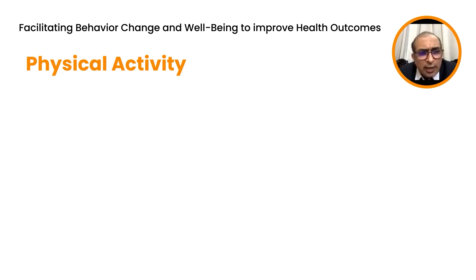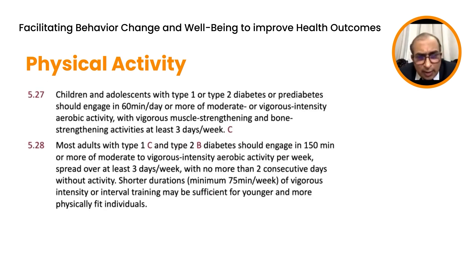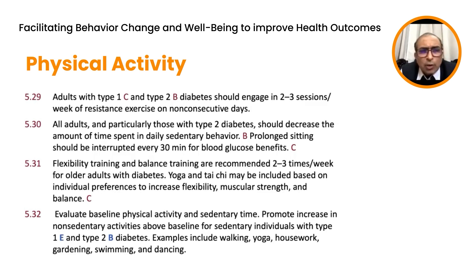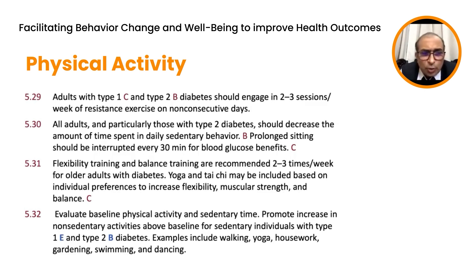Regarding physical activity, ADA guidelines state that all adults with type 1 or type 2 diabetes should engage in at least 150 minutes of moderate to vigorous intensity aerobic activity every week, spread over at least three days per week with no more than two consecutive days without activity. Two to three sessions of resistance exercise per week on non-consecutive days is also very useful for insulin sensitivity. Patients should avoid sedentary behavior, prolonged sitting, get up every hour, walk around, and also engage in flexibility and muscle strength exercises.